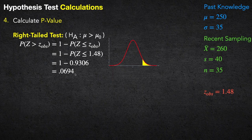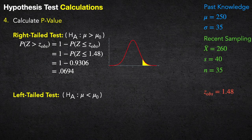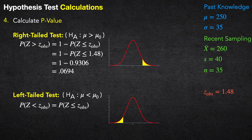For a left-tailed test, if we thought the true mean was less than 250, our uncertainty would be on the left-hand side. The p-value becomes P(Z ≤ z_observed), which is directly read from the table with no sign adjustment — the easiest case.